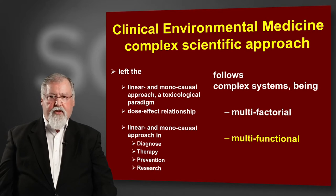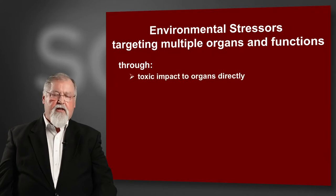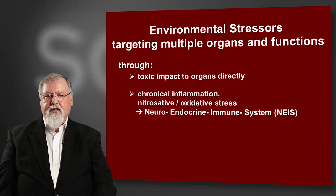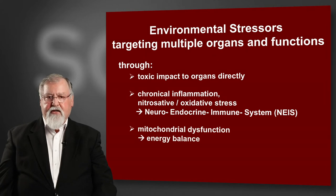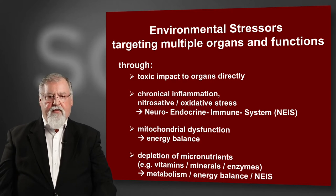Multifunctional — what does this mean? We see it works by targeting multiple organs and functions. We have the toxic impact to all organs directly. We have chronic inflammation, nitrosative and oxidative stress, especially affecting the neuroendocrine immune system. We have mitochondrial dysfunctions — this is the energy balance. And we see depletion of micronutrients, vitamins, minerals, and enzymes, as well as dysfunction of the metabolism, energy balance, and related insights.